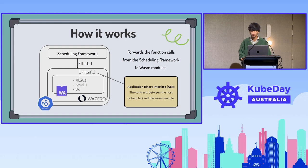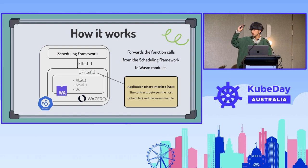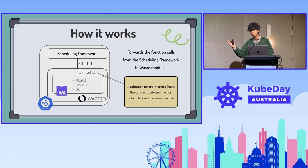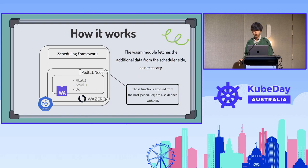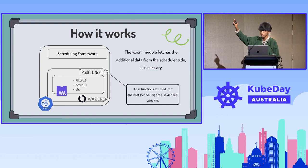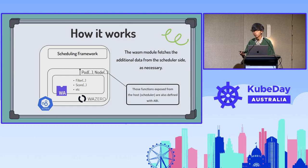Each of those functions corresponds to the same extension point in the framework. The interface between the scheduler side and the Wasm module side is called ABI — application binary interface. Users have to implement their own Wasm modules based on the ABIs we define. Sometimes the Wasm module also needs to get more data from the scheduler side — in such cases the Wasm module can call host functions exposed from the scheduler, and those host functions make the Wasm module able to do some extra work.